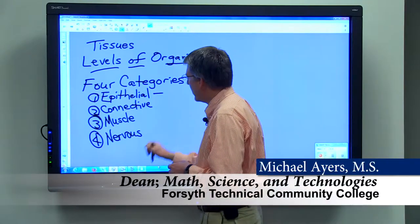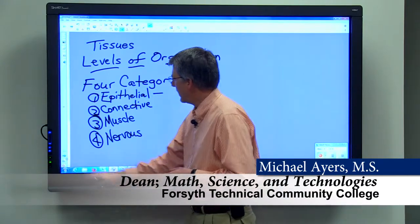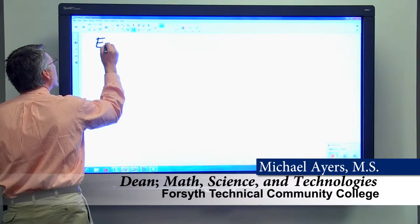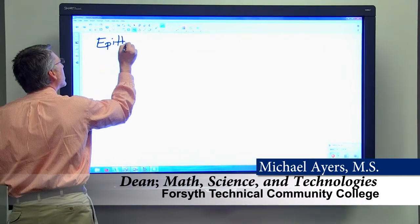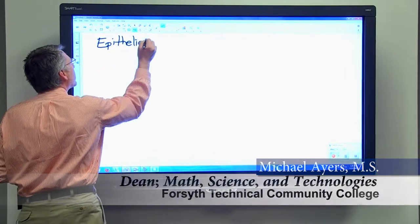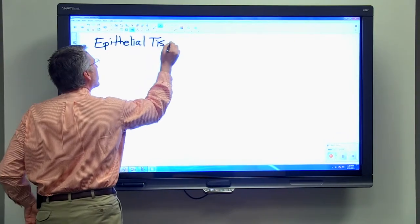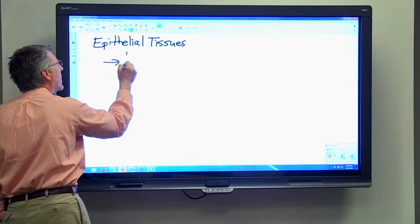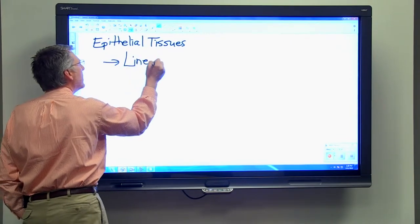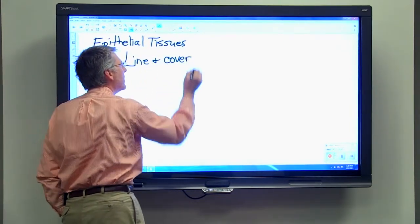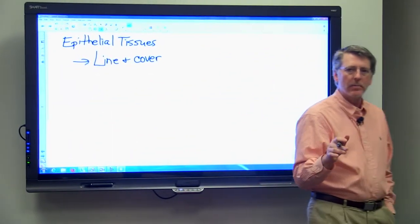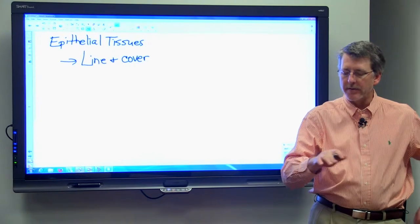Let's just look at these in general, and we'll start with epithelial tissues. Epithelial tissues have the job of lining and covering body surfaces. Anywhere you have a surface on your body, you're going to find epithelial tissue.